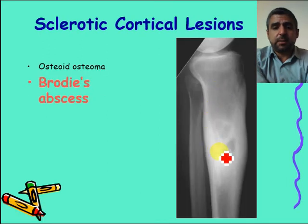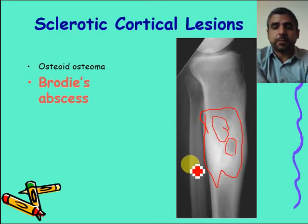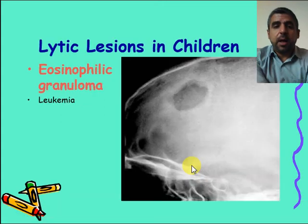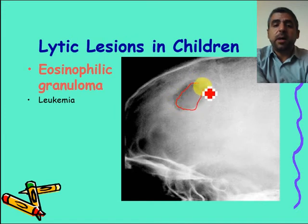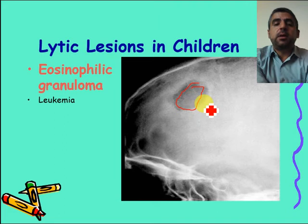Brodie's abscess is a form of osteomyelitis where the abscess becomes isolated, appearing as a lytic lesion surrounded by a sclerotic bone reaction. Regarding lytic lesions in children: if solitary, most likely it is eosinophilic granuloma — a very well-defined, punched-out lesion with beveled edges.